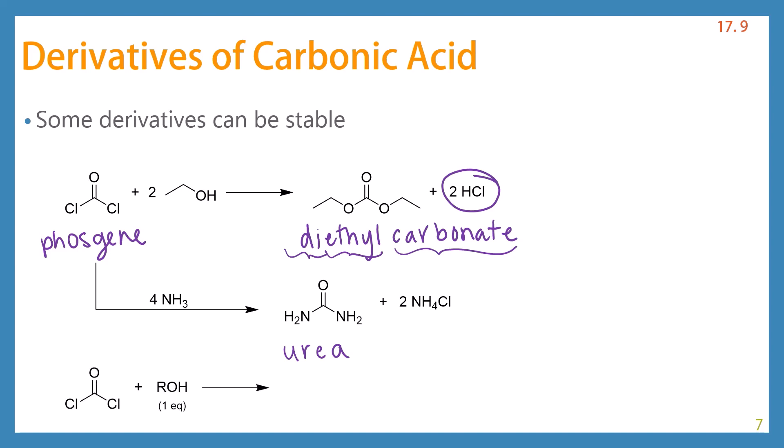And then in our last example here, if you were to take just one equivalent of alcohol and react it with phosgene, you could selectively displace only one chlorine. And in that situation, you would form what is called an alkylchloroformate, which we will see in just a second is a really great material for synthesis.